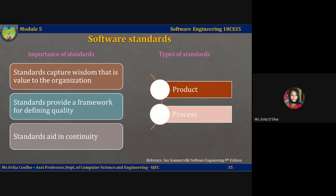Let's talk about software standards. Software standards play a very important role in software quality management. As part of the quality assurance process, tools and methods to support the use of software standards may also be chosen.